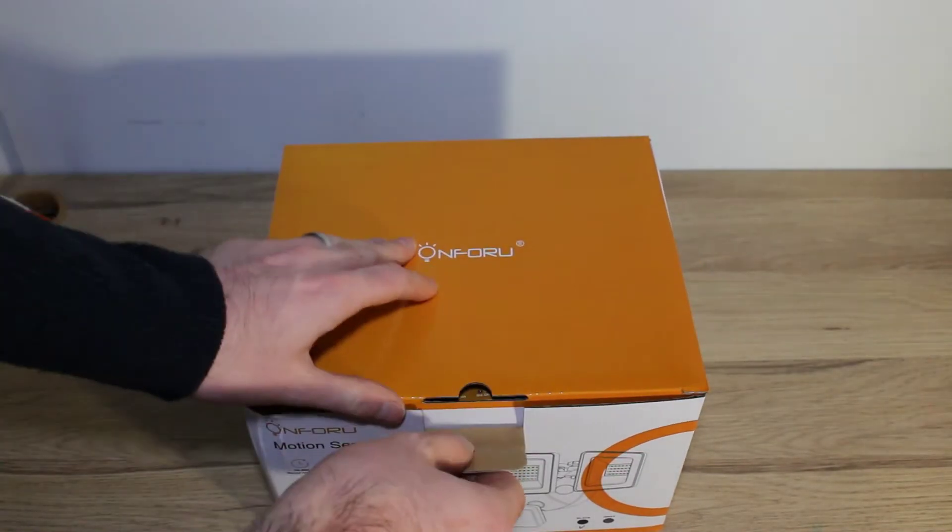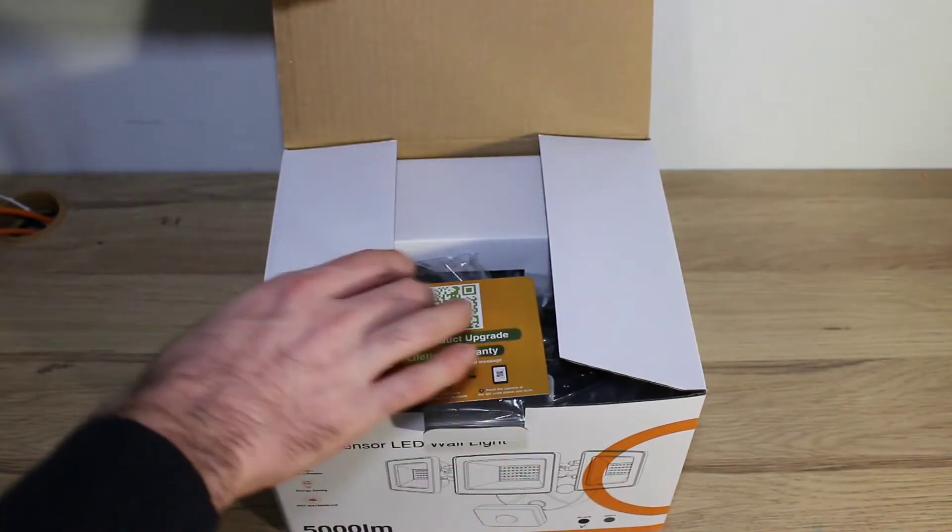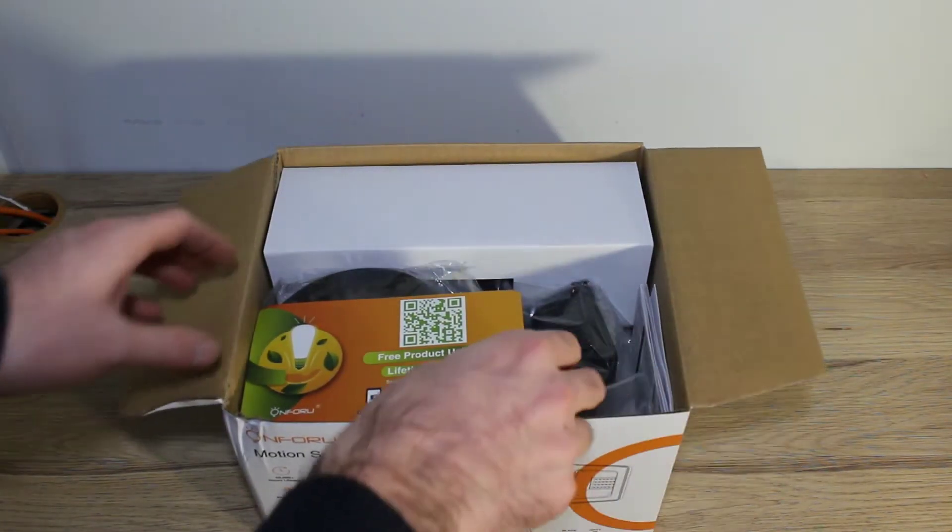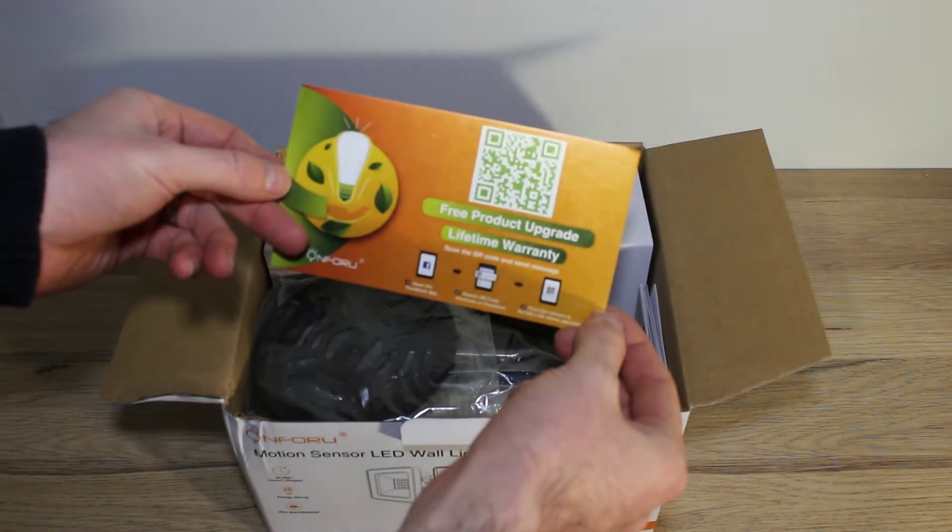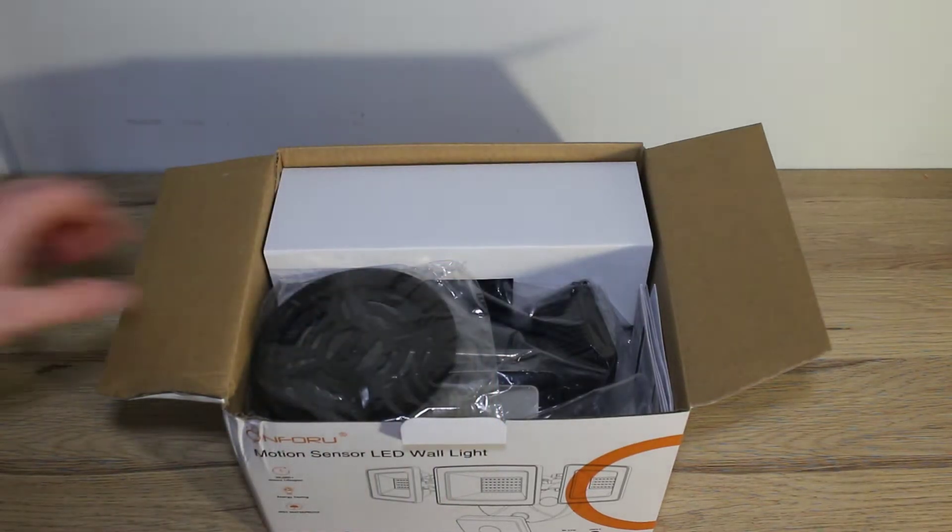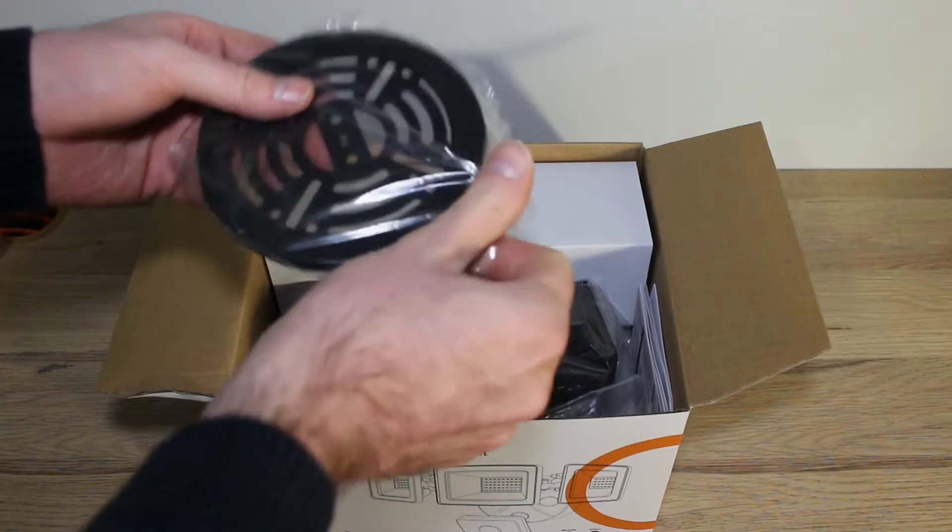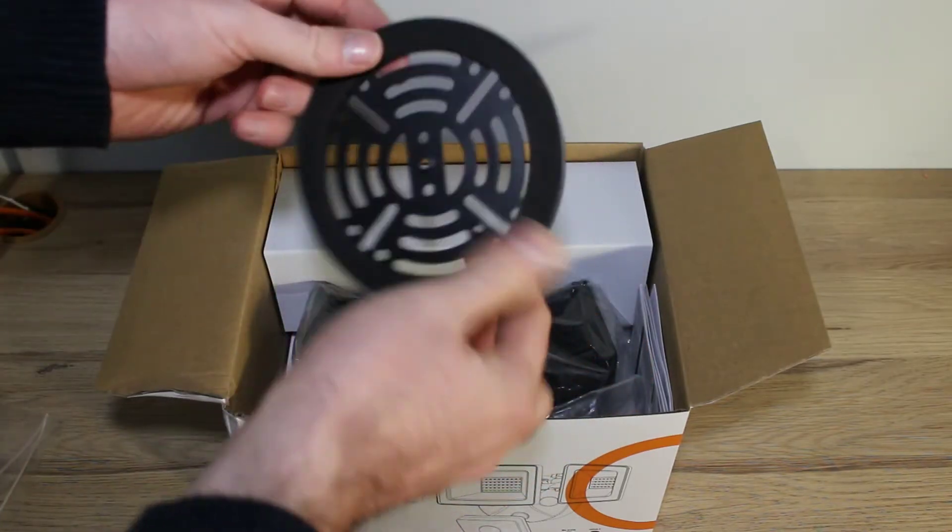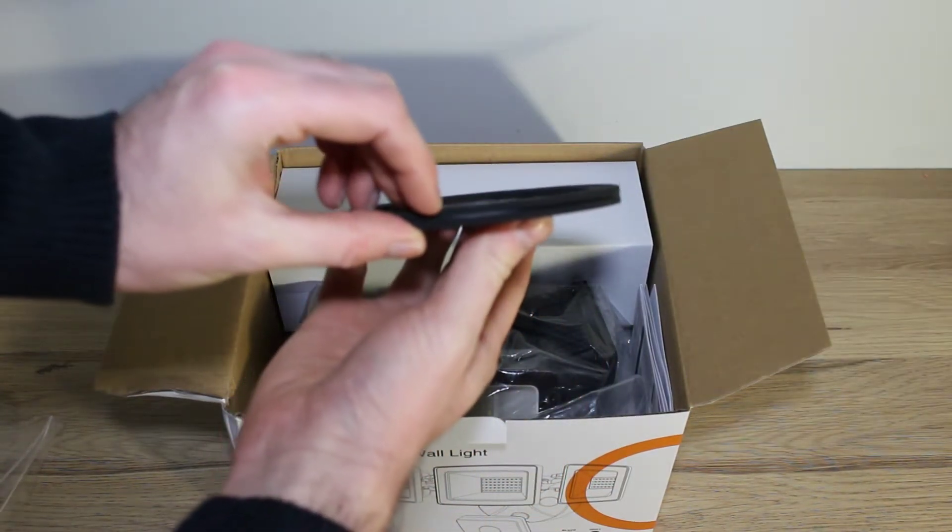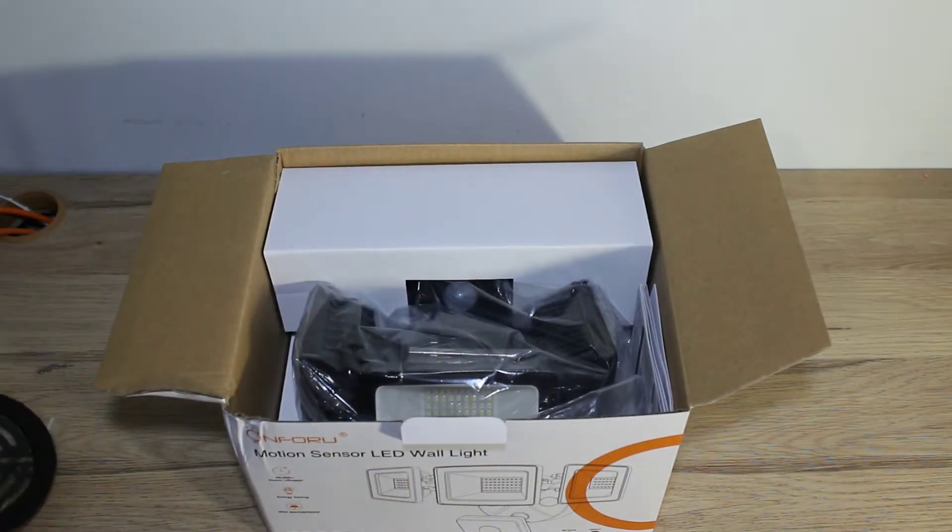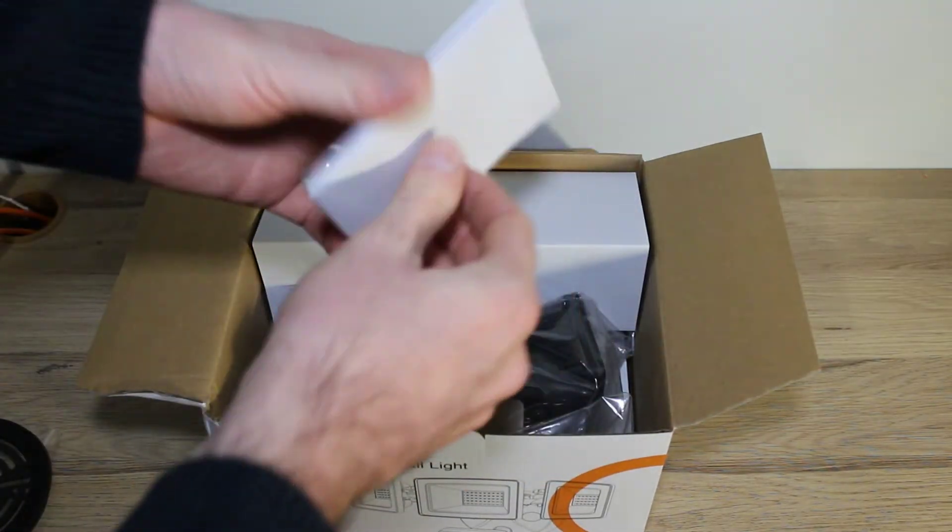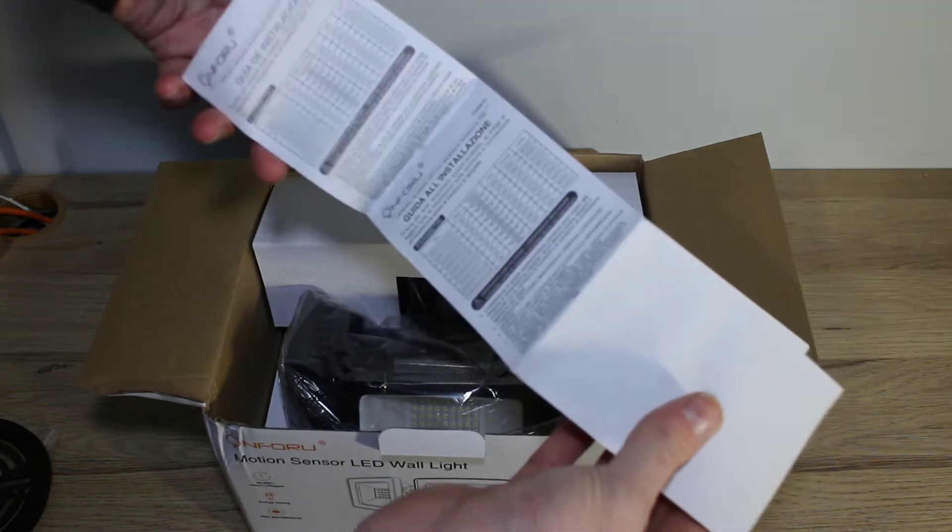What do we have in the box? We've got a warranty card here on the top, this is the back plate with a foam seal that goes around the outside, and the instruction manual with plenty of different languages.